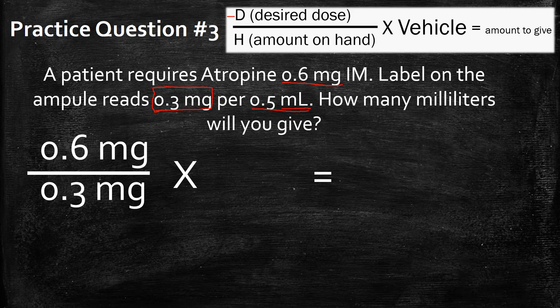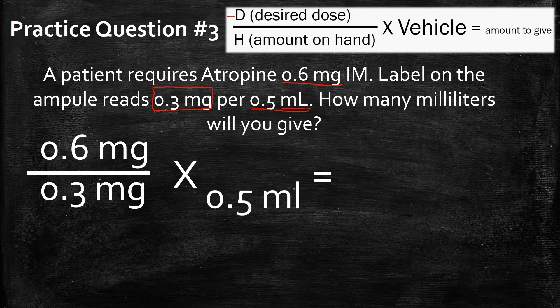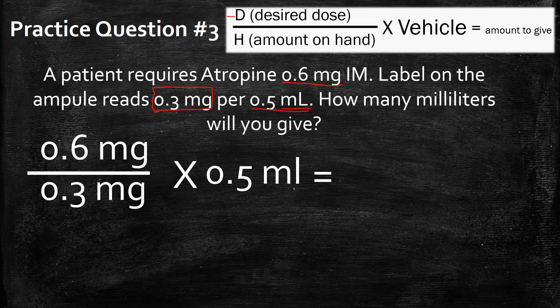Let's move on and just keep plugging this into the equation before we make this any more complicated than it needs to be. Vehicle is 0.5 milliliters. How many milliliters will you give?